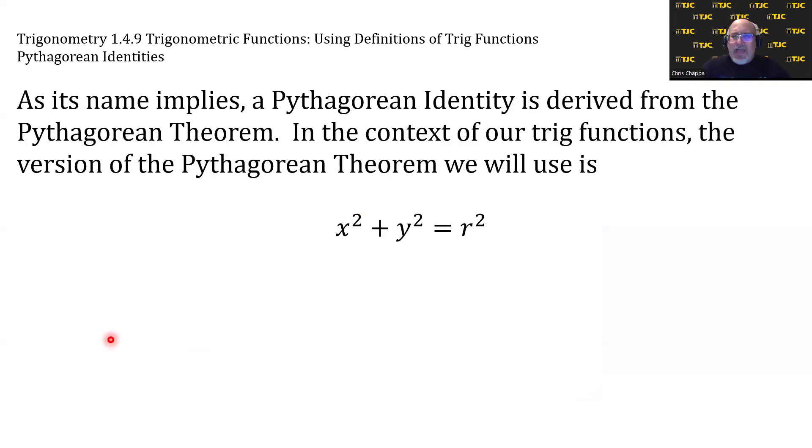As its name implies, a Pythagorean identity is derived from the Pythagorean Theorem. In the context of our trig functions, the version of the Pythagorean Theorem we will use is x² + y² = r².